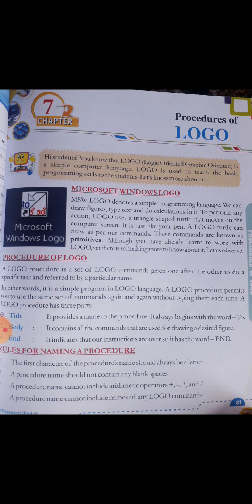Rules for naming a procedure: The first character of the procedure's name should always be a letter. The procedure name should not contain any blank space. A procedure name cannot include arithmetic operators such as plus, minus, asterisk, and slash. A procedure name cannot include names of any Logo commands.